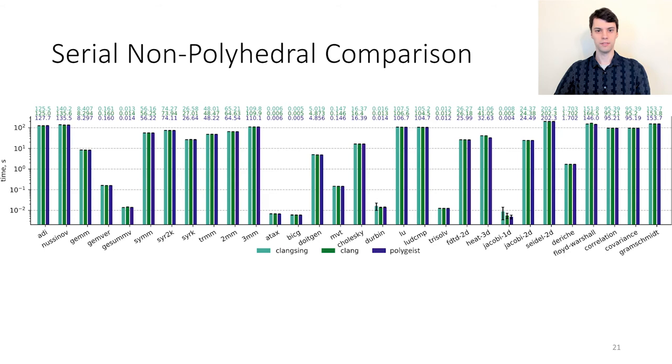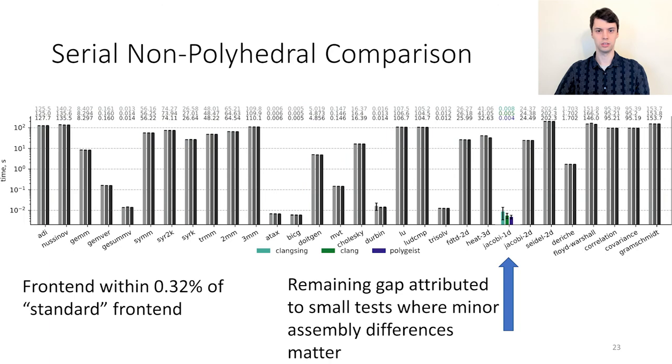For the baseline comparison, we evaluated three compilers: Polygeist, Clang with one round of optimization shown as ClangSing, and Clang with two rounds of optimization shown as Clang. We chose to compare with both one and two rounds of optimization, as Polygeist performs some optimizations on the MLIR level, as well as running Clang optimization when generating the final binary. In practice, it doesn't matter as all three compilers perform mostly the same. Specifically, Polygeist is within 0.3% of the standard front-end on average. The remaining gap can largely be attributed to small tests, such as Jacobi 1D, where minor differences in assembly matter much more.